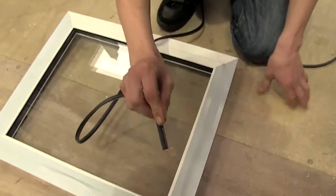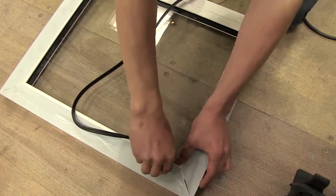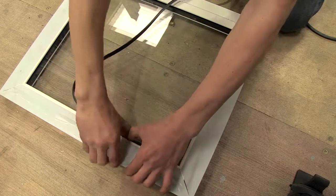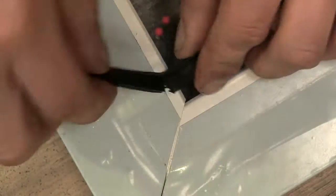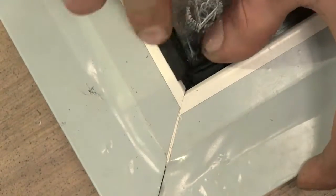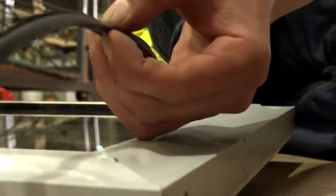Take the wedge gasket and start at the corner, push it in between the glazing and aluminium vent. Snip the wedge gasket internally at the corners. Cut wedge level at final corner.